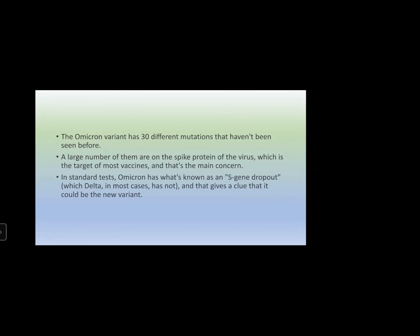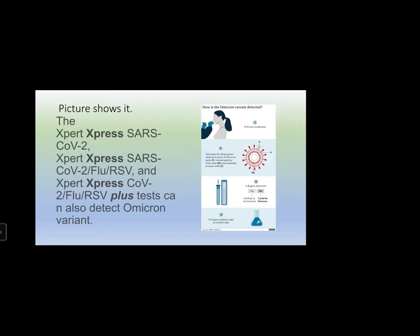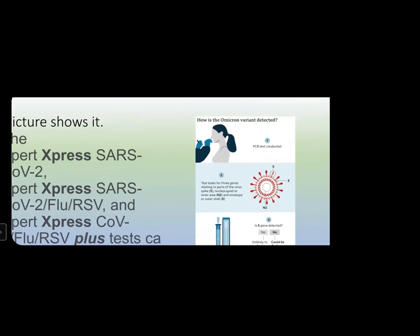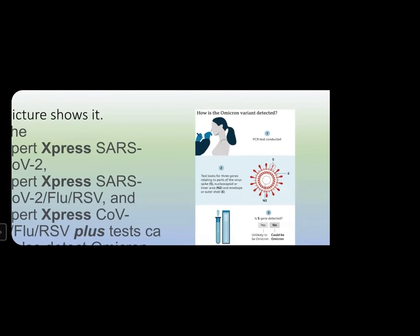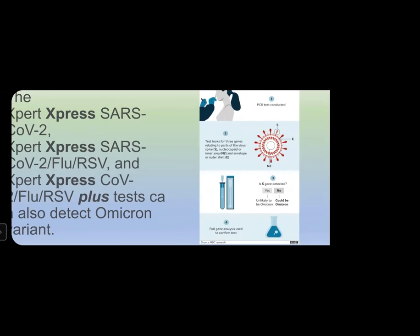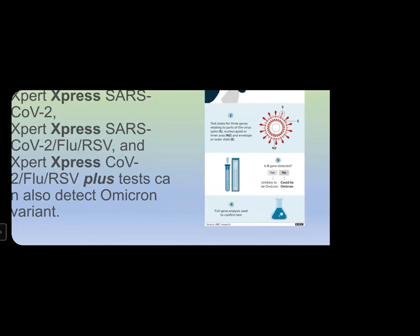In standard tests, Omicron has what is known as an S gene dropout — the spike gene is not detected, but in Delta it is mostly found. This gives a clue that it could be the Omicron variant. The PCR test is conducted using a nasopharyngeal aspirate sample and looks primarily for three genes: spike, nucleocapsid, and the envelope. If the S gene is detected, it is unlikely to be Omicron; if the S gene is not detected, it can very well be Omicron.